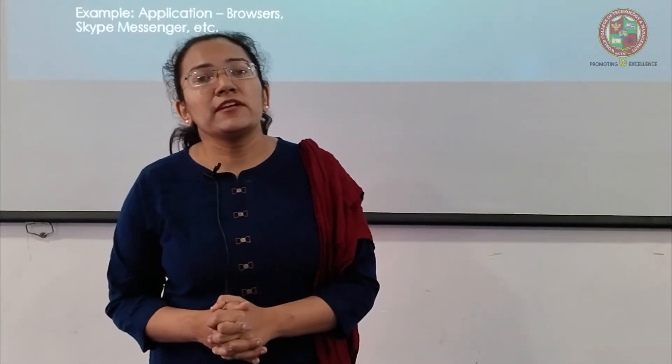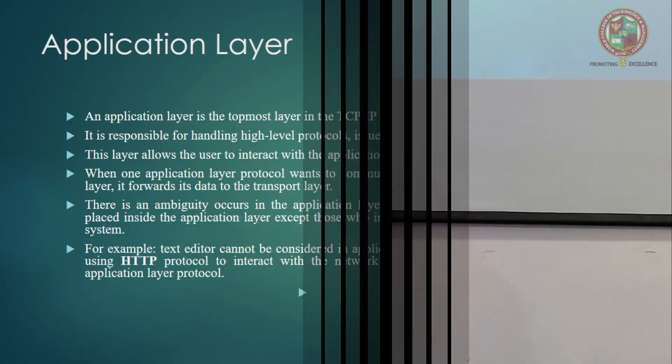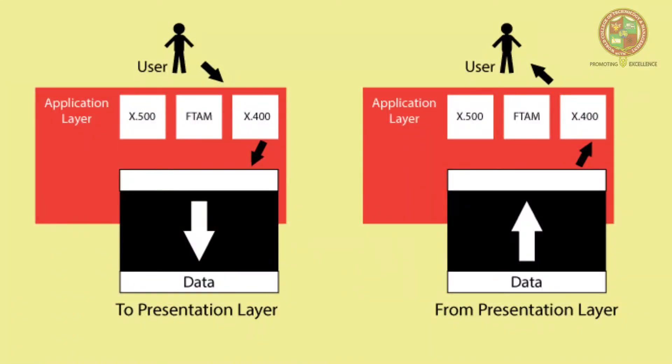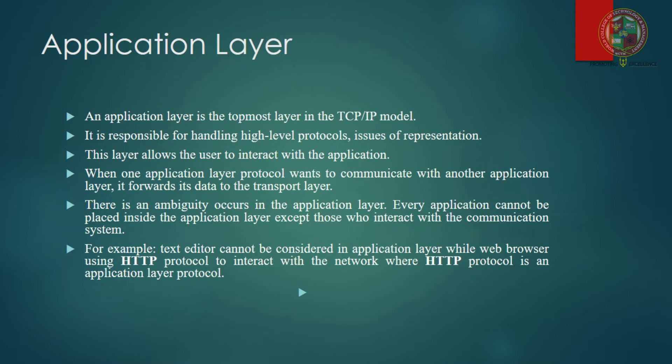The last layer, layer seven, is the application layer. It is used to represent and display applications used by the users. Examples of protocols at this layer include FTP (File Transfer Protocol), SMTP (Simple Mail Transfer Protocol), HTTP, and others.